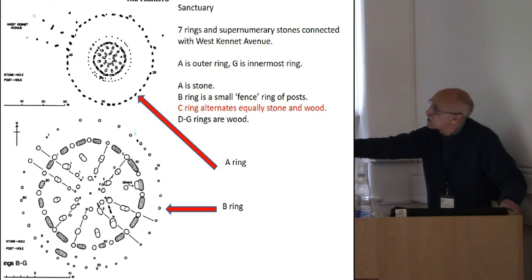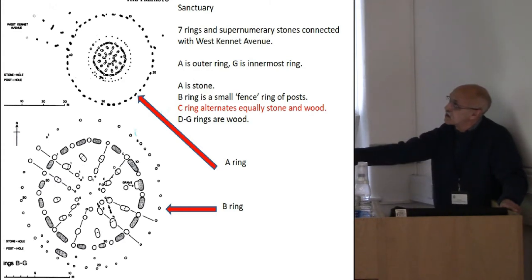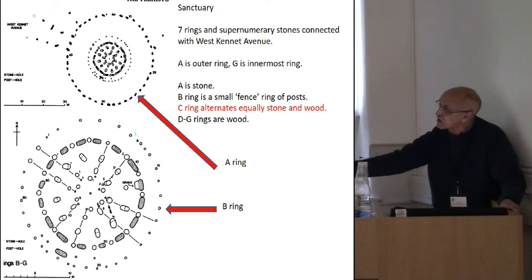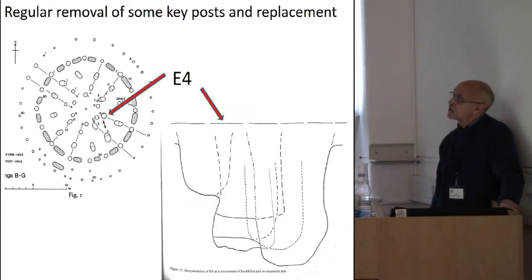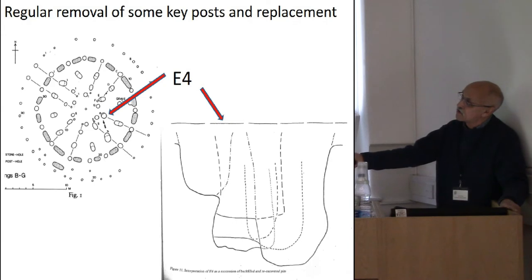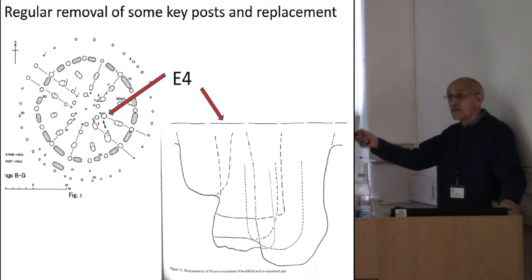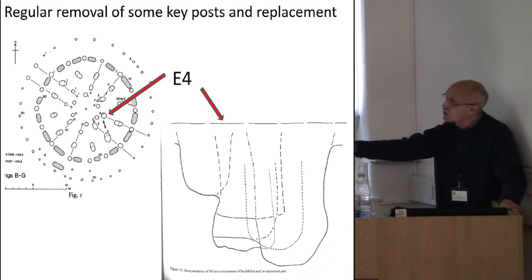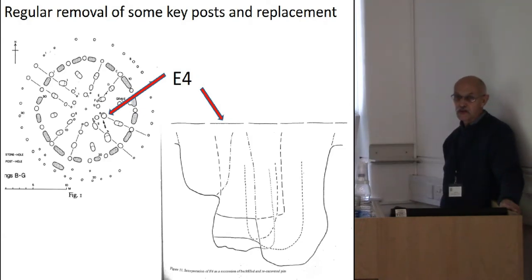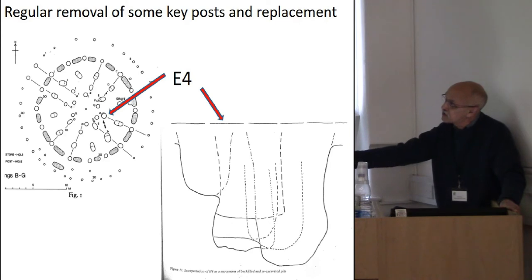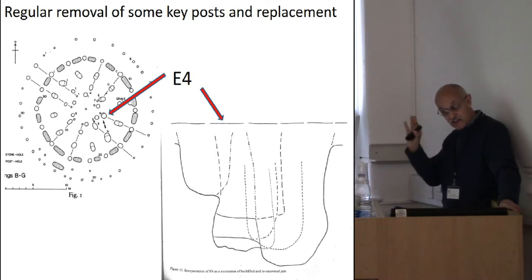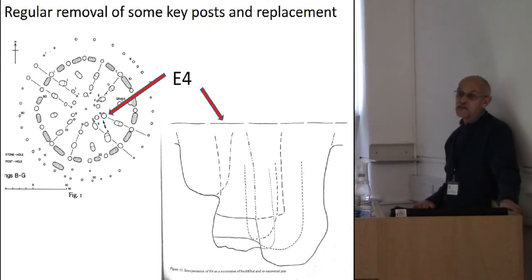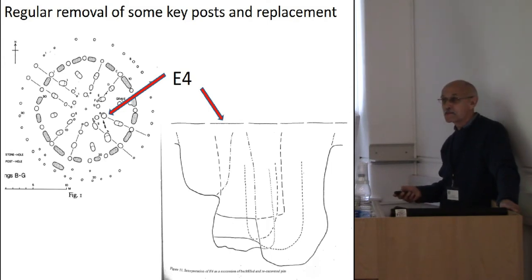The C-ring alternates equally with stone and wood. Mike Pitts, in the last excavation at the sanctuary, showed that some posts — especially in the south-east quadrant — had been regularly removed and replaced before the earlier ones had rotted, with five or even seven replacements taking place. If this was a roof structure, these C-ring posts are precisely the biggest ones that would carry the burden of the roof's weight. To replace the main beams holding up a roof clearly destabilises the concept of a roof structure.